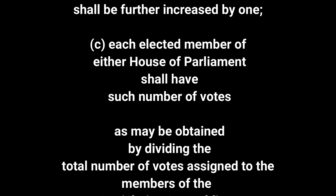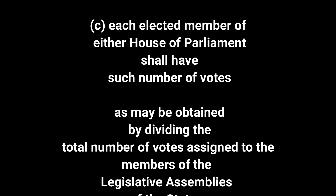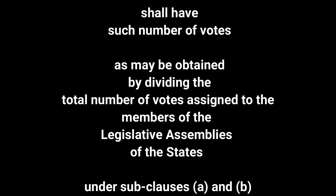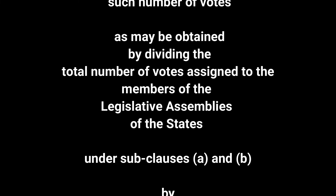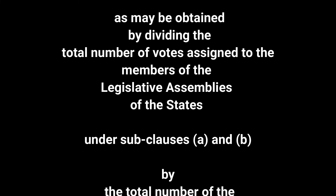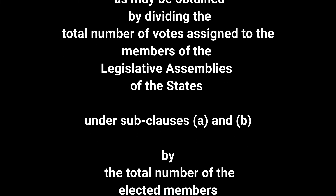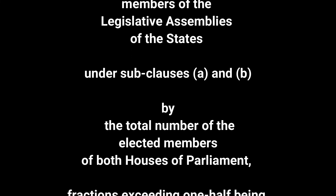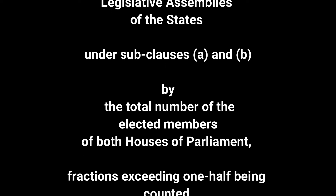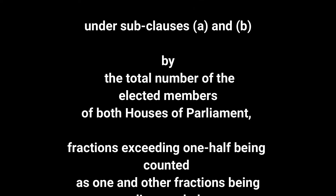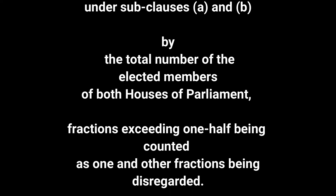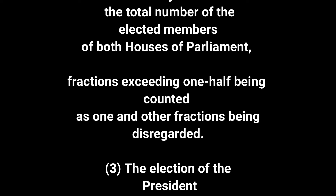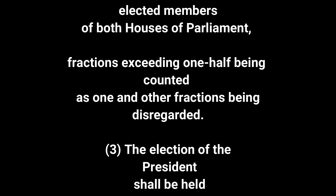Sub-clause c: Each elected member of either House of Parliament shall have such number of votes as may be obtained by dividing the total number of votes assigned to the members of the Legislative Assemblies of the States under sub-clauses a and b by the total number of the elected members of both Houses of Parliament, fractions exceeding one-half being counted as one, and other fractions being disregarded.